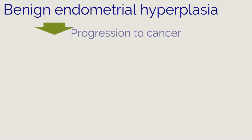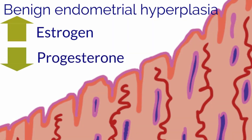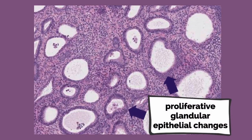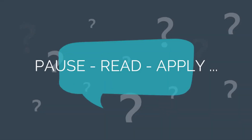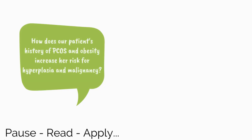For women with benign endometrial hyperplasia, the risk of progression to cancer is low — less than 5%. This develops secondary to estrogenic stimulation of the endometrium unopposed by progestins. As seen on this slide from our patient, there are proliferative glandular epithelial changes; glands are labeled with the letter G and the stroma with the letter S. How does her history of PCOS and obesity increase her risk for hyperplasia and malignancy?